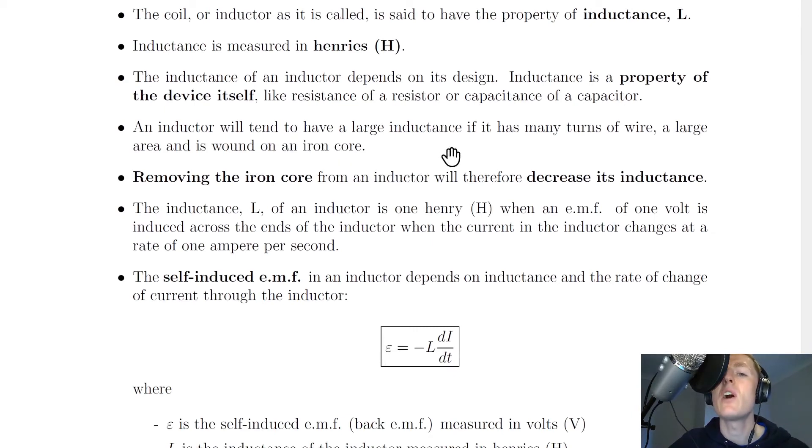An inductor will tend to have a large inductance if it has many turns of wire, a large area, and is wound on an iron core. Removing the iron core from an inductor so that it's just an air-cored inductor will therefore decrease its inductance.